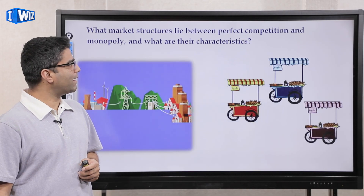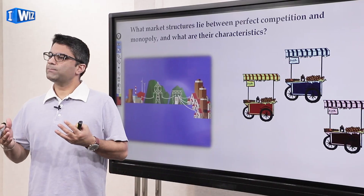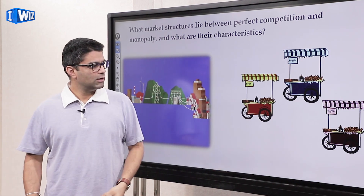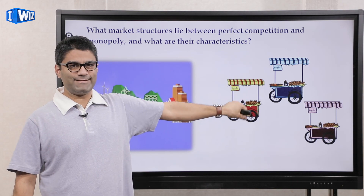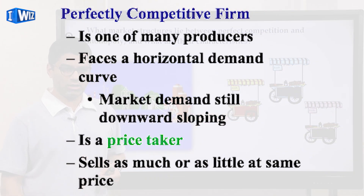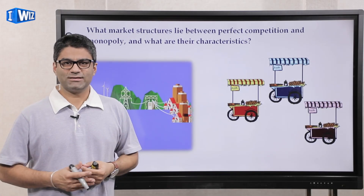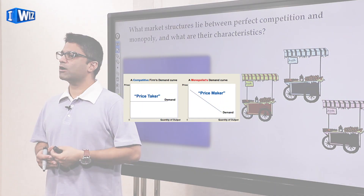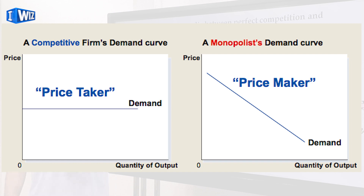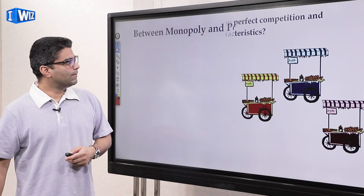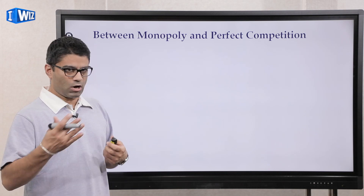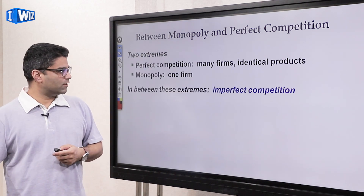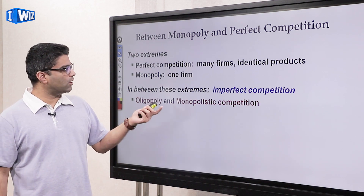Hey guys, hope you're doing well and are ready to get back to the topic of imperfect competition. The past several videos we've talked about two very important markets: perfect competition — where we talked about the bakery with many many producers selling identical goods with no control over price — and monopoly, where we talked about utilities as an example. In today's video we're going to talk about two markets which come somewhere in between: monopolistic competition and oligopoly.